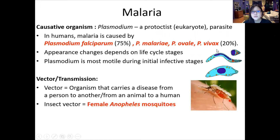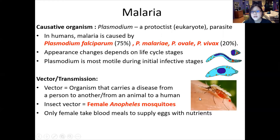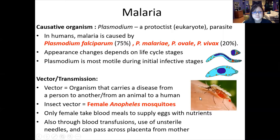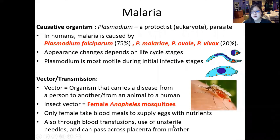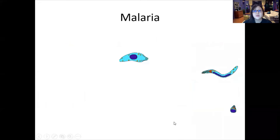Now let's talk about what you should write in an exam. A vector, which you should know the definition for, is an organism that carries a disease from one person to another, or from an animal to a human. Only female Anopheles mosquitoes will bite, because the female needs to supply its eggs with nutrients. Although malaria can also be transmitted through blood transfusions, use of unsterilized needles, and can pass across the placenta from mother to child, these are very rare — mostly it's through the female Anopheles mosquitoes.